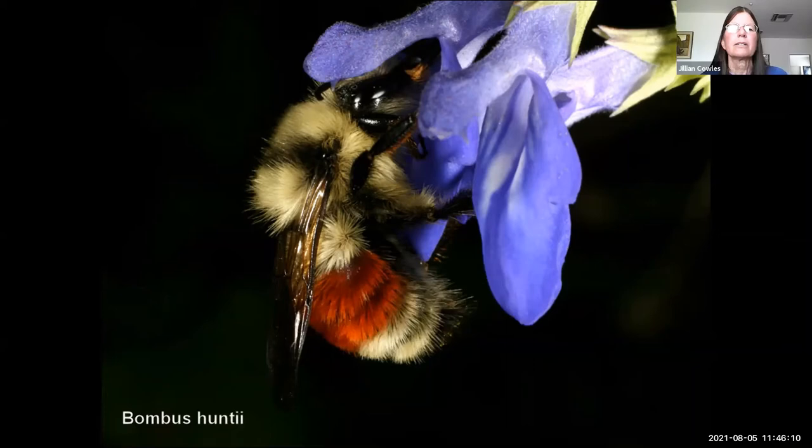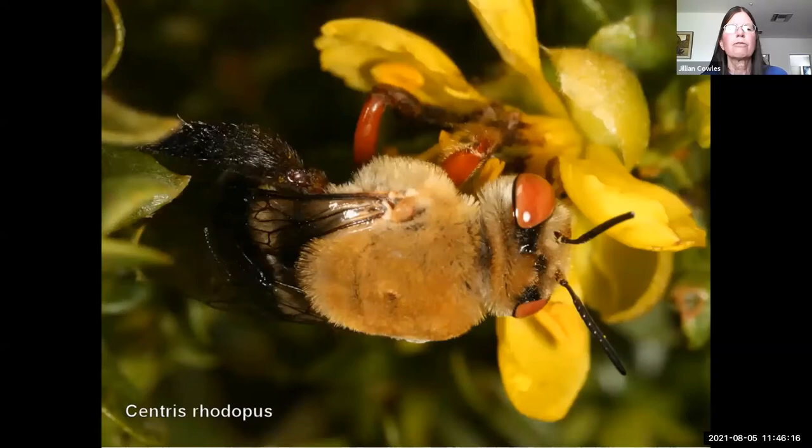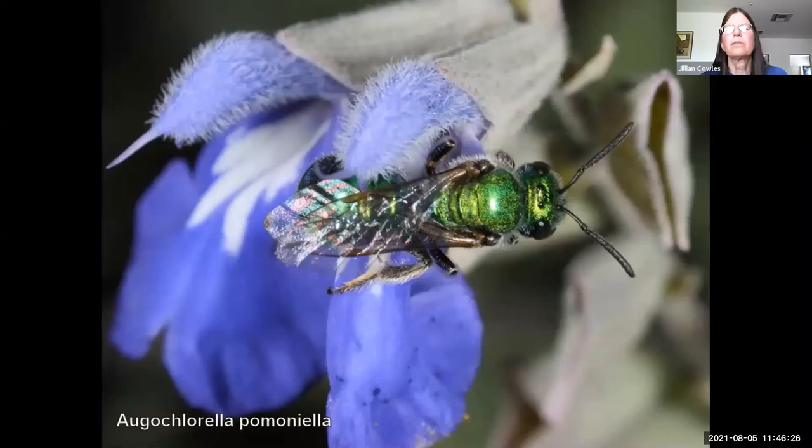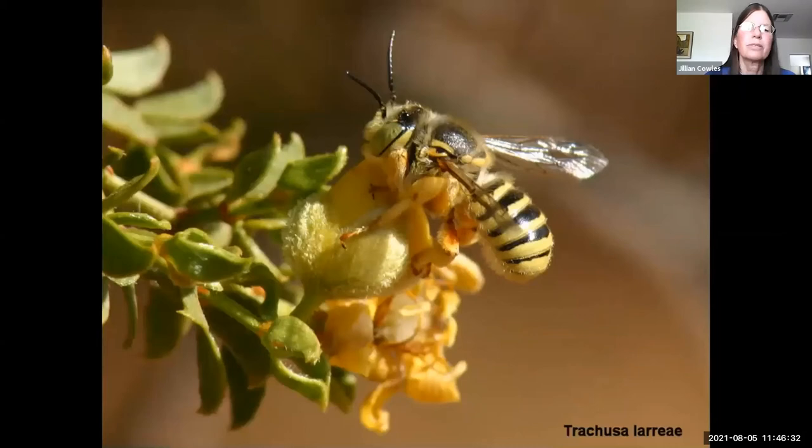These bees are some of them very colorful and beautiful. Some are more or less generalists — Centris bees seem to visit quite a few different flower species, as do some of the little sweat bees. Here's a little sweat bee visiting seep willow — beautiful little metallic bees. But some bees are specialists: Triepeolus larreae is associated solely with creosote flowers.